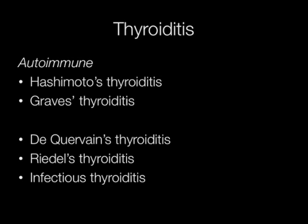There are a number of varieties and causes of thyroiditis. Autoimmune types of thyroiditis include Hashimoto's thyroiditis and Graves thyroiditis. Rarer causes of thyroiditis include De Quervain's and Riedel's thyroiditis. Direct or haematogenous spread of infection can result in infectious thyroiditis.